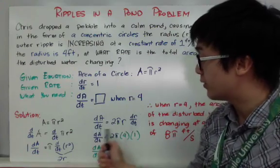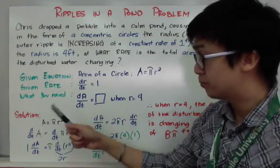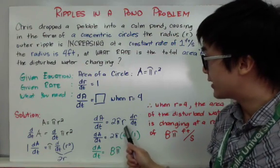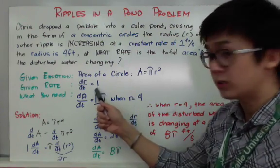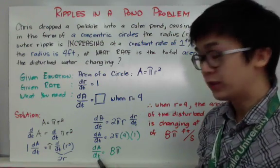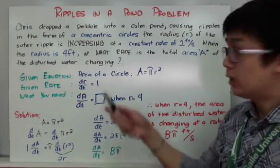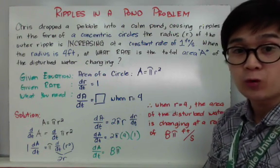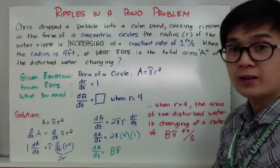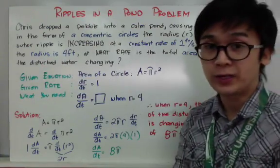Substituting the values — r equals 4 and dr over dt equals 1 — into dA over dt equals 2 pi r dr over dt gives dA over dt equals 8 pi. Therefore, when the radius is 4 feet, the area of the disturbed water is changing at a rate of 8 pi feet per second.